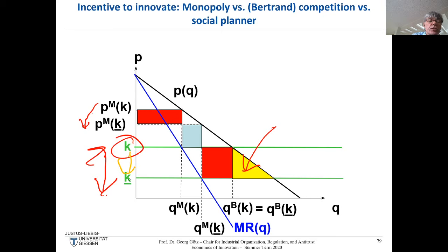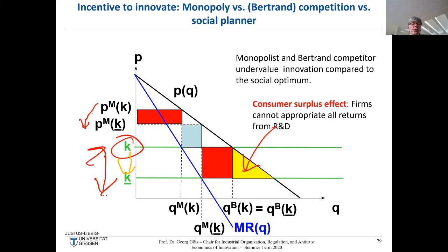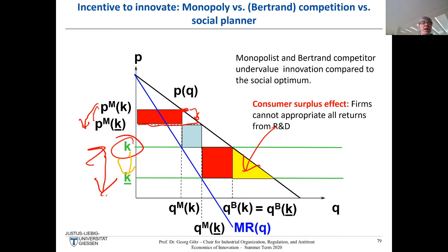The willingness to pay for innovation: the red areas are larger than the blue one, meaning the firm under Bertrand competition has a higher incentive to innovate than a monopolist. The yellow triangle tells you the social planner has an even higher incentive to invest in R&D. Both monopolist and Bertrand competitor undervalue innovation compared to the social optimum — this is the so-called consumer surplus effect.